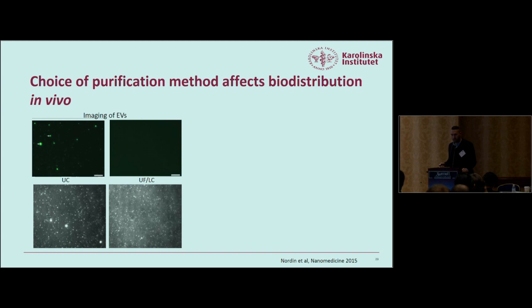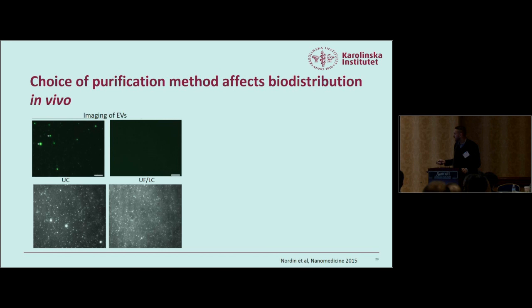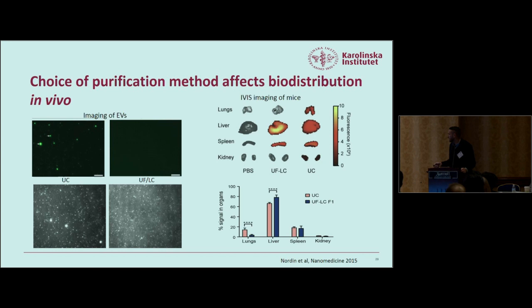A key issue we've noticed with ultracentrifugation from biodistribution studies is the presence of very bright fluorescent dots visible by simple light microscopy in UC samples — GFP-positive exosome aggregates — which we never see in filtration- and chromatography-purified samples. We believe these are caused by irreversible aggregation from the high G-forces in the UC spin, as confirmed by TURF imaging. This consistently causes greater accumulation of vesicles in the lungs of mice injected with ultracentrifugated samples.